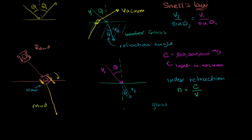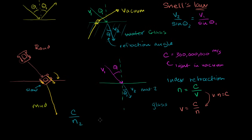We can rewrite Snell's Law in terms of index of refraction. Since n = C/V, then V = C/n. Substituting into Snell's Law: instead of V2 we write C/n2, and instead of V1 we write C/n1. So the equation becomes: (C/n2) / sin(theta 2) = (C/n1) / sin(theta 1).